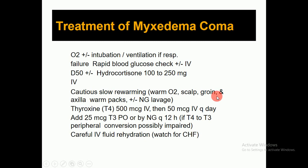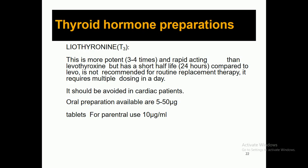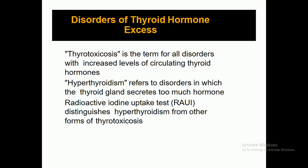Warm packs and NG tube lavage should be done. Thyroxine T4 500 micrograms IV, then 50 micrograms IV daily, and 25 micrograms T3 orally or by NG tube every 12 hours. T4 to T3 peripheral conversion is possible. Careful IV fluid rehydration — watch for congestive heart failure. As discussed, if a patient has a cardiac problem, liothyronine should be avoided.